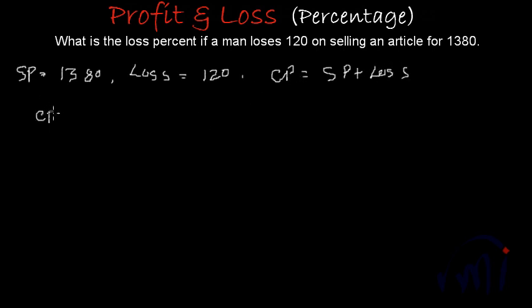So from here cost price will be equal to 1380 and loss over here is 120. So plus 120 and this will be equal to 0 plus 0 is 0, 8 plus 2 is 10, 1 carried forward, 3 plus 1 is 4, plus 1 is 5 and 1. So the cost price over here is 1,500.